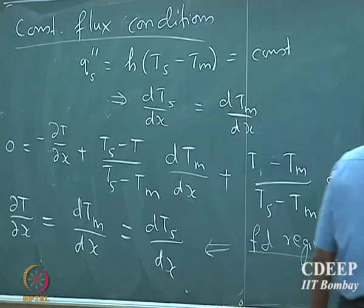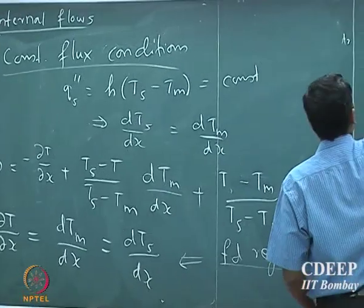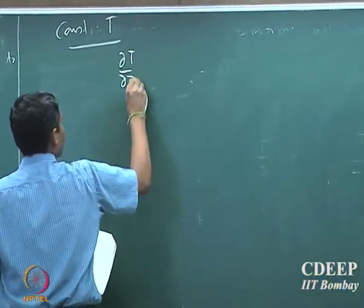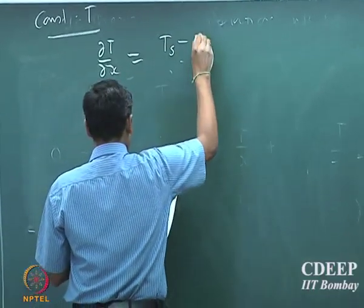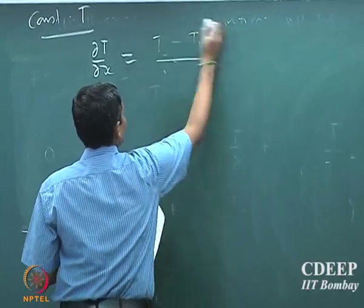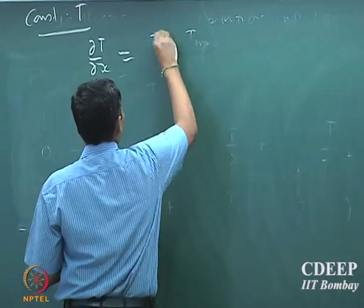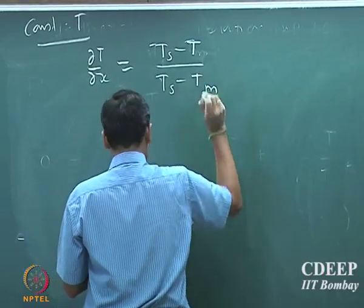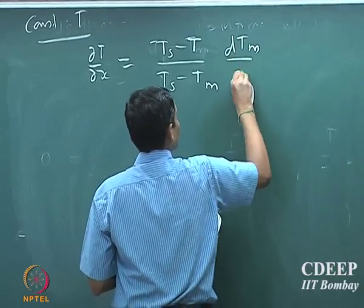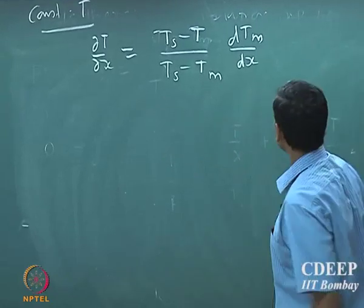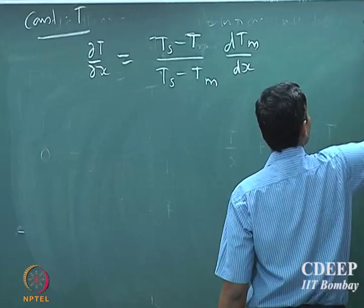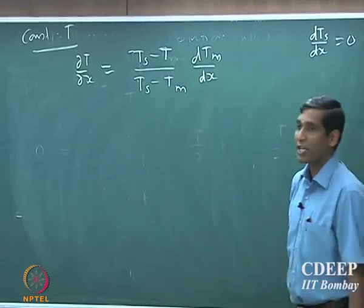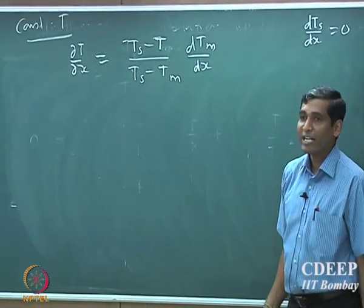One could do the same exercise for the constant temperature case. You will see that dT/dx equals (T_s minus T) divided by (T_s minus T_m) into dT_m/dx. For the constant temperature case, the temperature gradient in the wall is 0, so dT/dx is (T_s minus T) divided by (T_s minus T_m) into dT_m/dx.